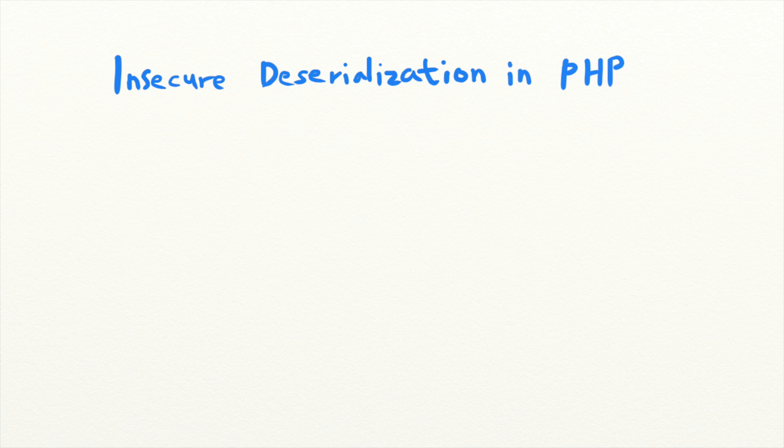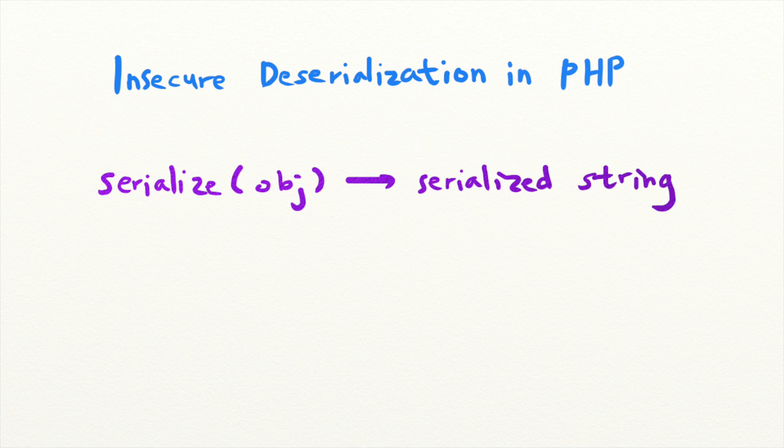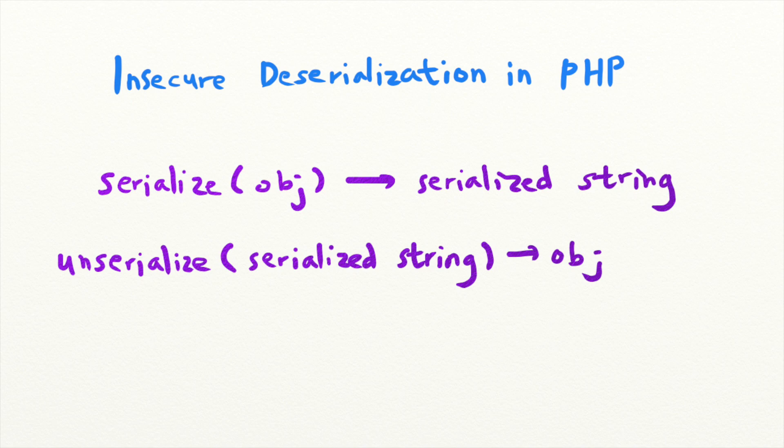When you need to store a PHP object or transfer it over the network, you use Serialize to pack it up. When you need to use that data, you use Unserialize to unpack and get the underlying object.